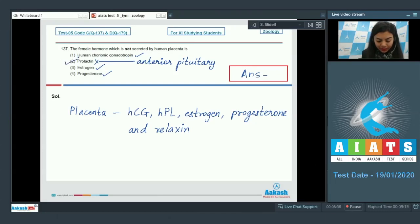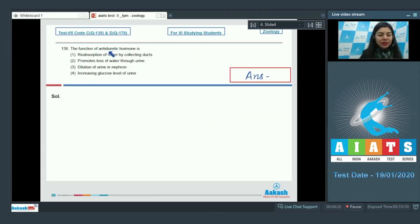Prolactin is not secreted by human placenta, so this is our right answer. Prolactin is secreted from anterior pituitary. Answer is two. Question number 138: The function of anti-diuretic hormone is - reabsorption of water by collecting ducts, promotes loss of water through urine, dilution of urine in nephron, increasing glucose level of urine. Anti-diuretic hormone is also known as vasopressin. Since it is anti-diuretic, it means it will prevent the excess loss of water through urine.